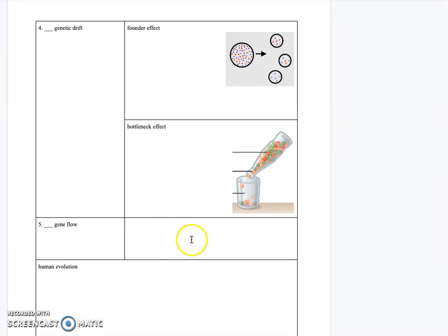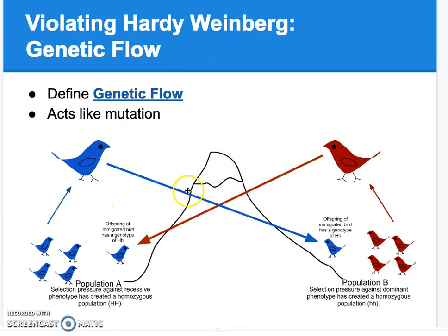Gene flow occurs between fragmented populations, and the new genes act just like mutations because they are new alleles entering a population from another. For example, imagine a mountain range separating two populations of bird species — population A and population B. A bird flies over the mountain and introduces its blue allele into a red population, producing a directional change in allele frequencies over time.